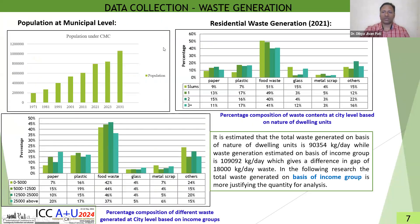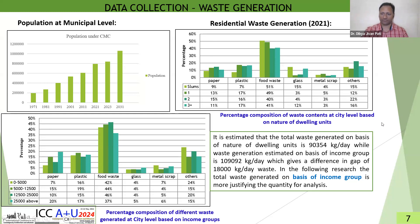Coming to the waste generation, population estimation is very important. Based on the population, residential waste generation was calculated for 2021. I used two methods: percentage composition of waste content at city level based on nature of building units, and based on income group. Though the target groups are the same, as per my research I have considered the waste generation based on income groups to be more justified.